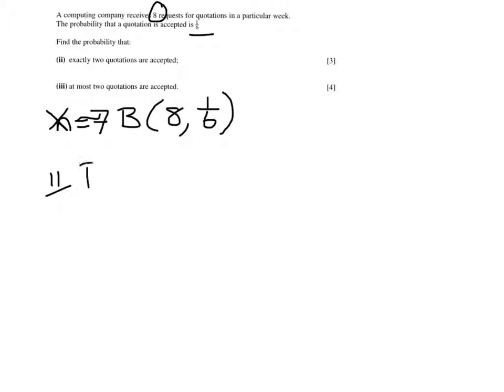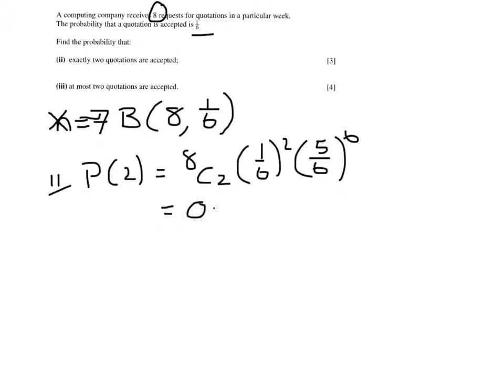So in part 2, the probability that 2 will be 8C2, 1/6 to the power 2, times 5/6 to the power 6. And this gives us 0.260, and that answer has been given to 3 significant figures.